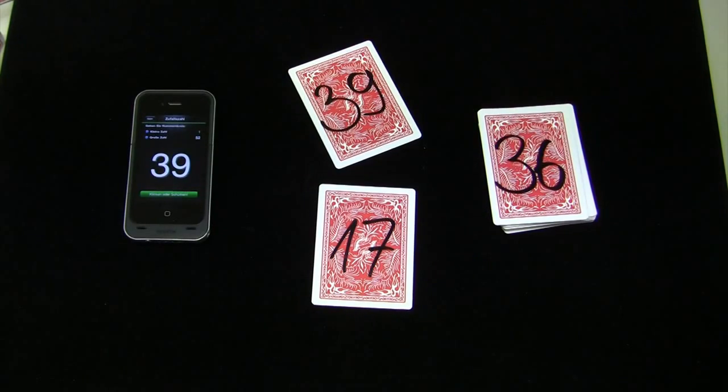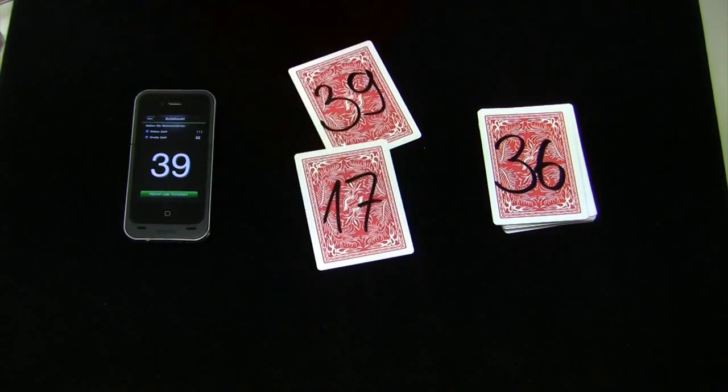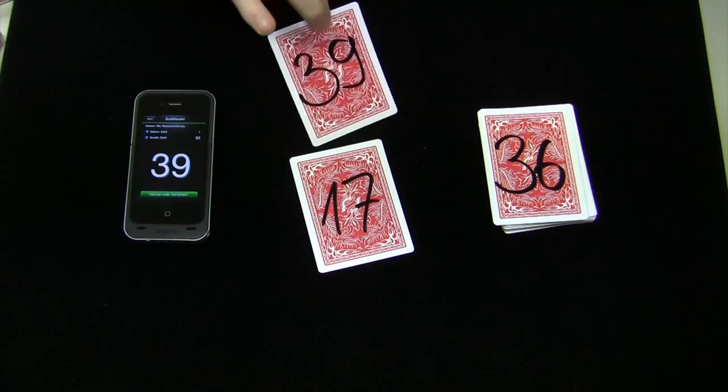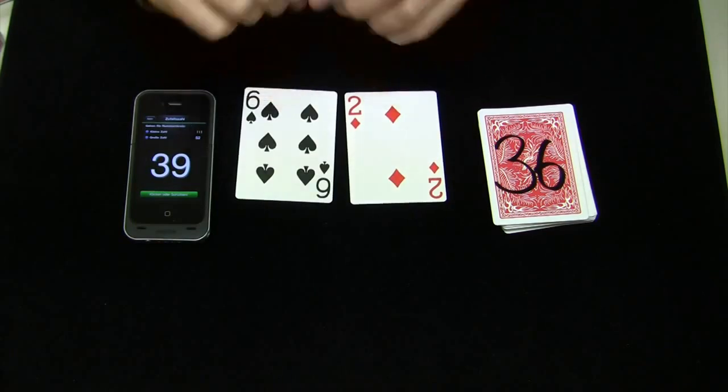So by random, we chose the Two of Diamonds, the number 17, and for the Six of Spades, 39. And indeed, both are true. This is triple coincidence, three times in a row, a perfect match.